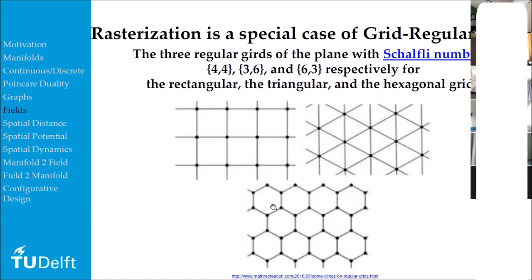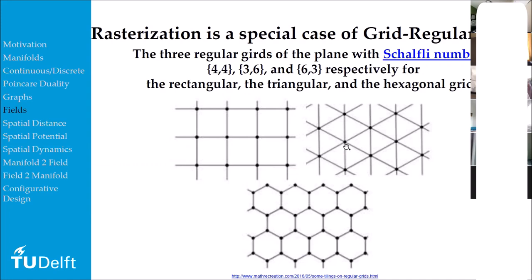We have a similar situation with regular grids. If you take the hexagonal grid and want to model the way these hexagonal cells are neighbors to each other — encoding that in a graph to send over a telegraph line — you would send the connectivity information of a graph connecting their centers. If you start indicating the links between those centers, you get a triangular network. So we say the hexagonal grid is dual to the triangular grid — and it works the other way around too.